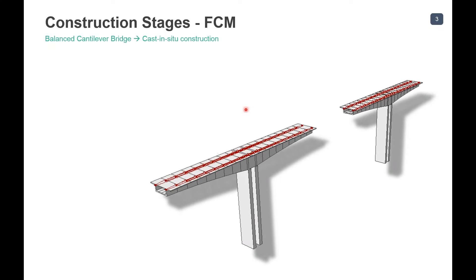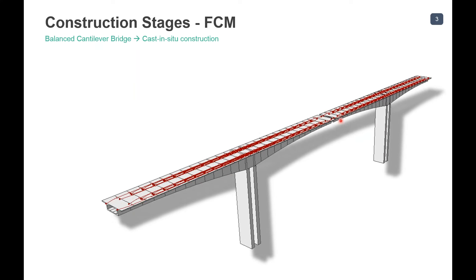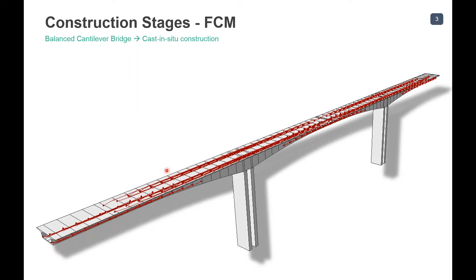Construction stage analysis is required because the structure evolves — structural analysis must be performed for each stage and sectional stability checked at each stage. In the erection sequence, a pier table is present and segments are cast one after the other with cantilever or continuity tendons stressed. Time-dependent characteristics of concrete and relaxation of prestressing strands must be precisely considered. Accumulated analysis results from preceding stages are carried forward to each subsequent construction stage.